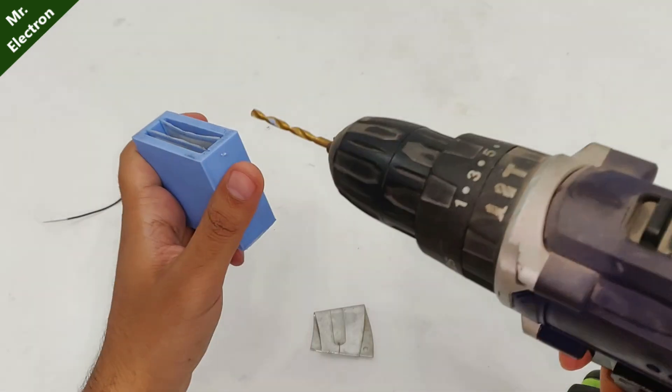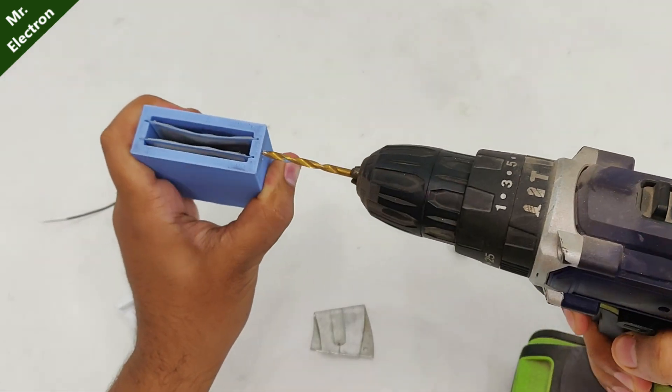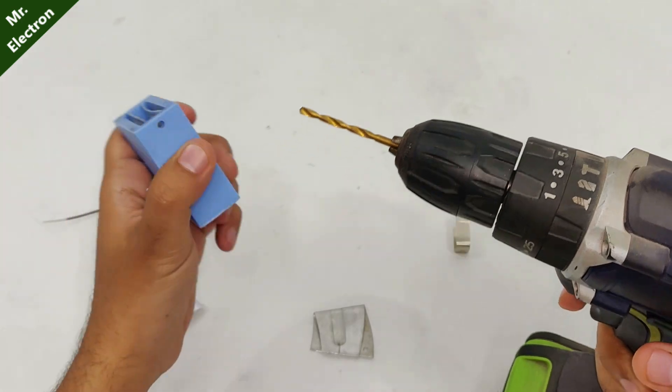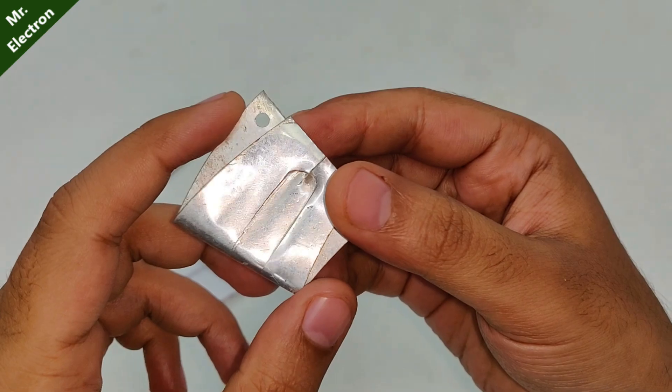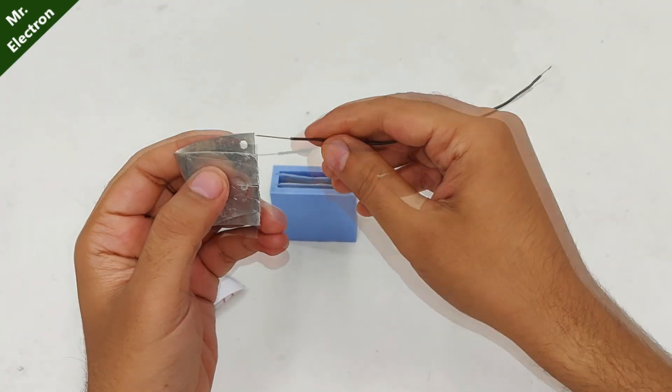Now take the cell and drill a hole. After that take the aluminum sheet, you can see I've already done this hole over here. Take a black wire and connect it through this hole.